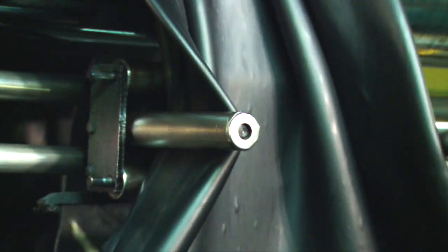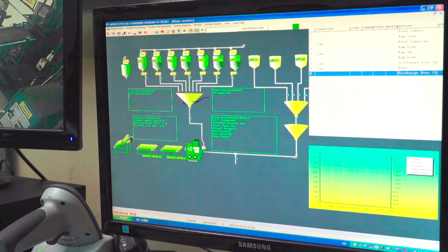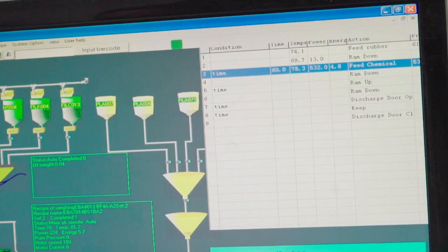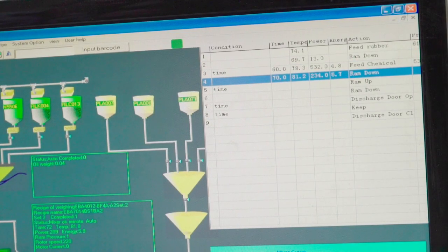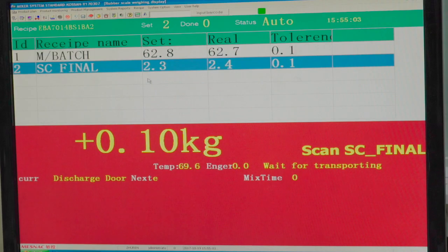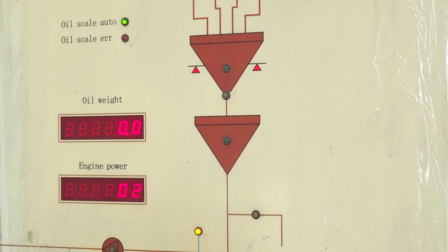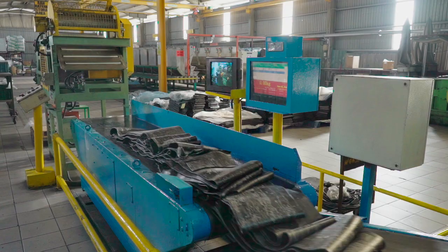We've continued to refine our compounding capacity with stringent accuracy requirements and efficiency. Advanced software is used to optimize automated mixing processes with designated volume, desired temperature, and mixing time to yield consistency on each compounding process.